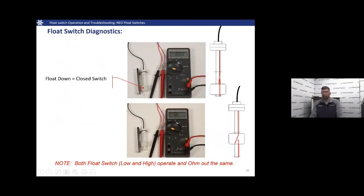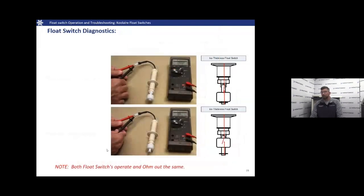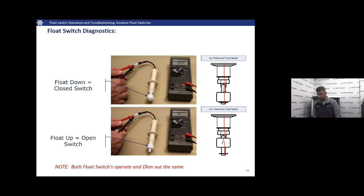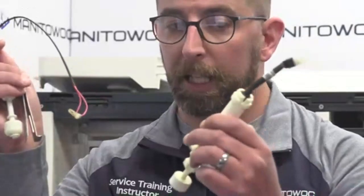On screen you can see a float in the down position being ohmed out, and below that in the up position, again being ohmed out, seeing what we're expecting to see. Another picture shows a cool air float — you'll notice that this one has a plug on it, unlike the NEO with wires coming out. So you can see the differences between our floats: the NEO with the wires and the cool air unit with just a plug.